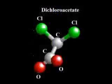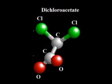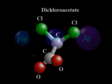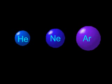Atoms of certain elements bond readily with each other. For example, such elements as oxygen and chlorine readily form bonds with other atoms. The atoms of some elements do not easily bond with other atoms — for example, helium, neon, and argon do not bond with other atoms.